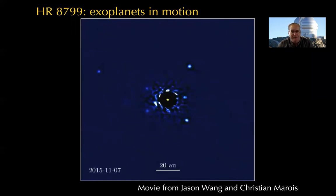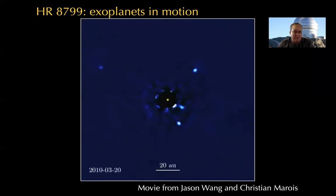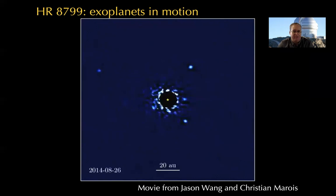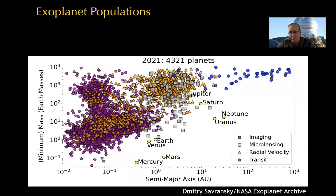In particular, this shows the power of direct imaging — in addition to having an image of the planet, we can also take spectra of these objects once the light from the planet is separated from light from the star.